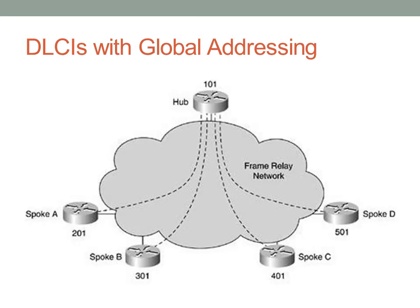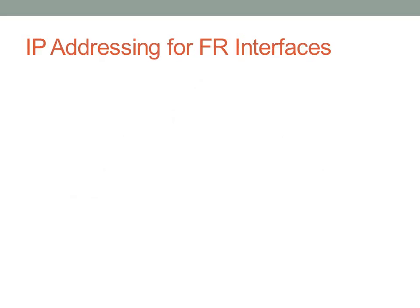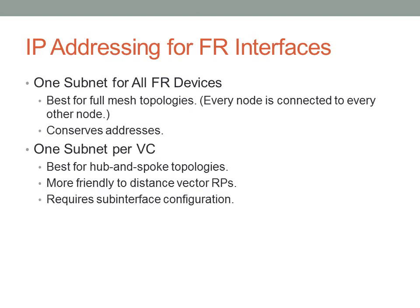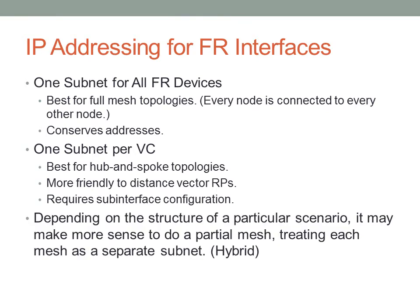With global addressing, it looks like the source address is each endpoint. For example, if spoke D wants to send data to the hub in the middle connected to several endpoints, it will use address 501, which determines the outbound virtual circuit and appears as a source address based on the DLCI mappings. For IP addressing on Frame Relay interfaces, you can use one subnet for all Frame Relay devices — good for full mesh topologies and saves addresses — or one subnet per virtual circuit, which requires more addresses but is often better.